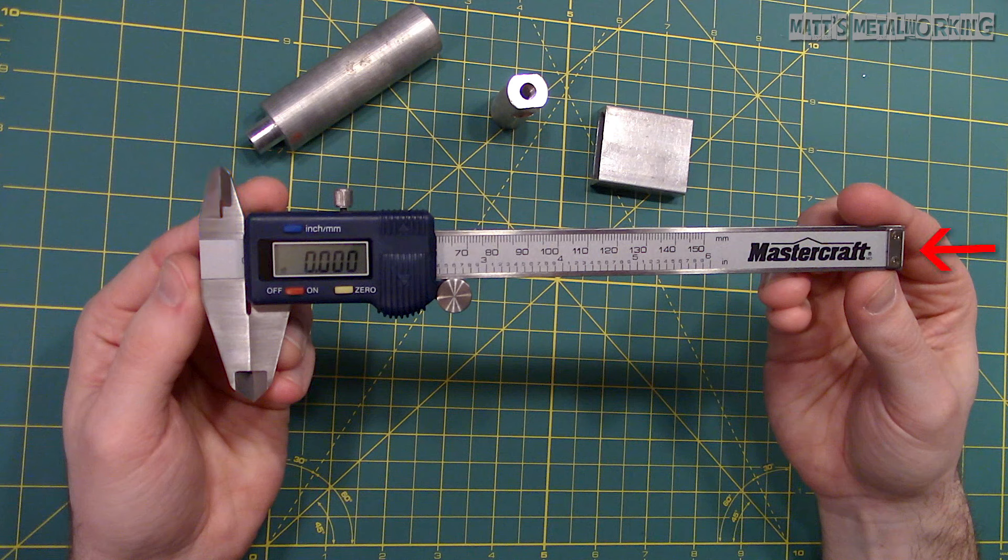The depth probe or rod used to measure a groove, slot, step or hole. The beam or sometimes referred to as the bar is the frame of the caliper that is stationary and houses the depth probe.